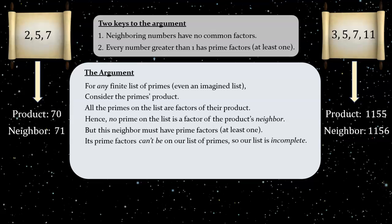Let's watch this play out in our two concrete examples. On the left example, we know that the product's neighbor, 71, has a prime factorization, as every number greater than 1 does. In fact, 71 itself is prime, so the only new prime factor here, which wasn't on our original list, is 71 itself.